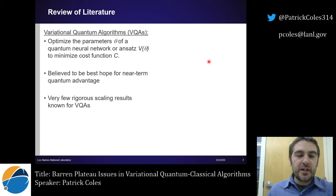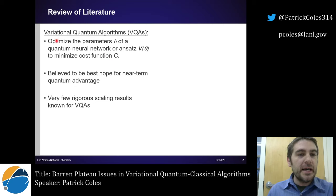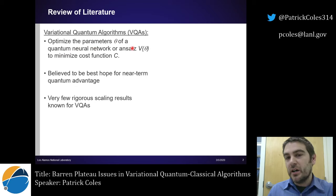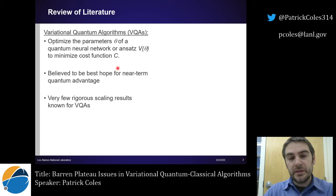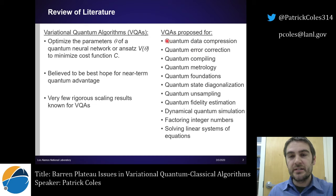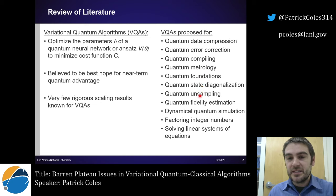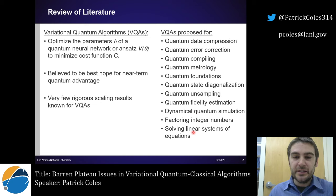First I want to talk about variational quantum classical algorithms, or for short variational quantum algorithms. These algorithms optimize the parameters of a quantum neural network, or a parametrized quantum circuit, in order to minimize a cost function. They're widely believed to be the best hope for obtaining near-term quantum advantage, and that's why they've been proposed for so many applications like quantum data compression, error correction, compiling, metrology, foundations, state and sampling, fidelity estimation, dynamical simulation, factoring, and linear systems.